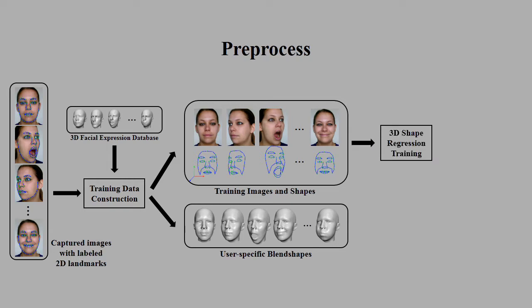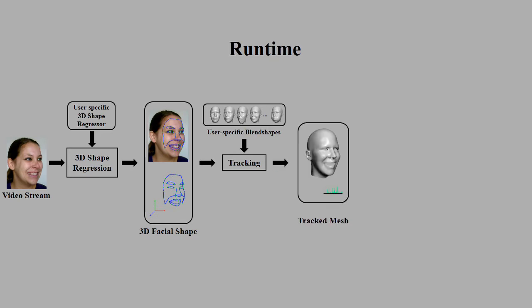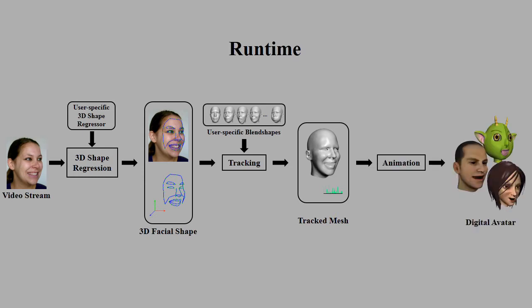From these images and shapes, we train a user-specific regressor that maps 2D image appearance to 3D shape. At runtime, this 3D shape regressor is used in calculating the 3D positions of facial landmarks from a 2D video stream. The head's rigid transformation and facial expression parameters are calculated from the 3D landmark positions. They are then transferred to a digital avatar to generate the corresponding animation.